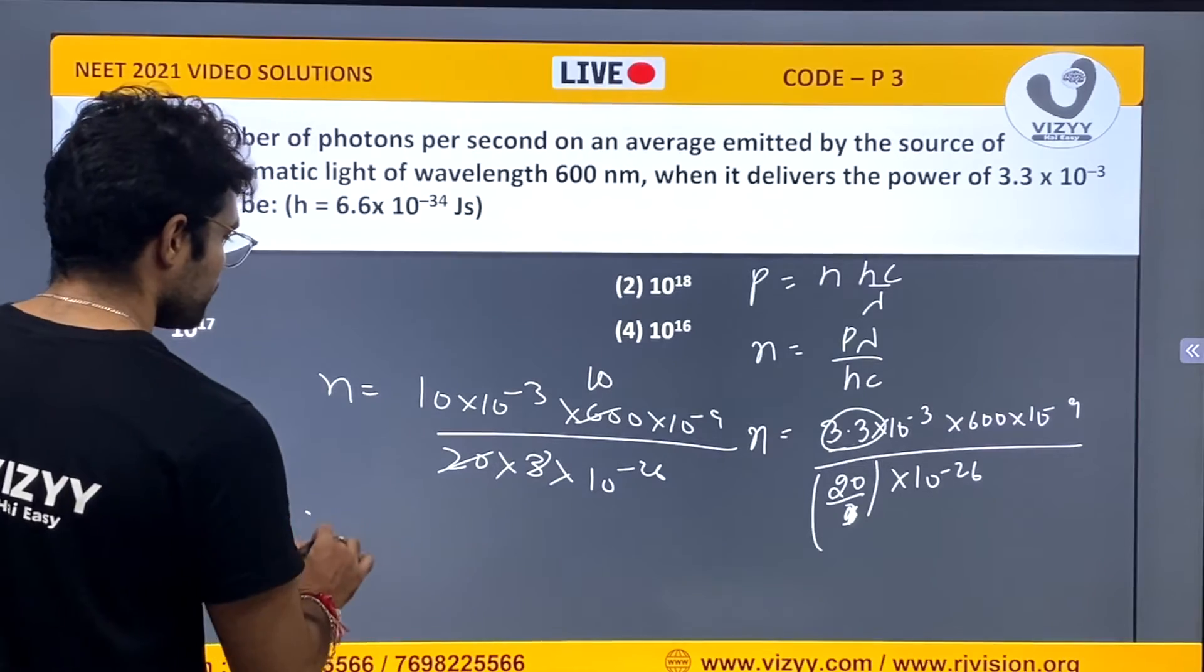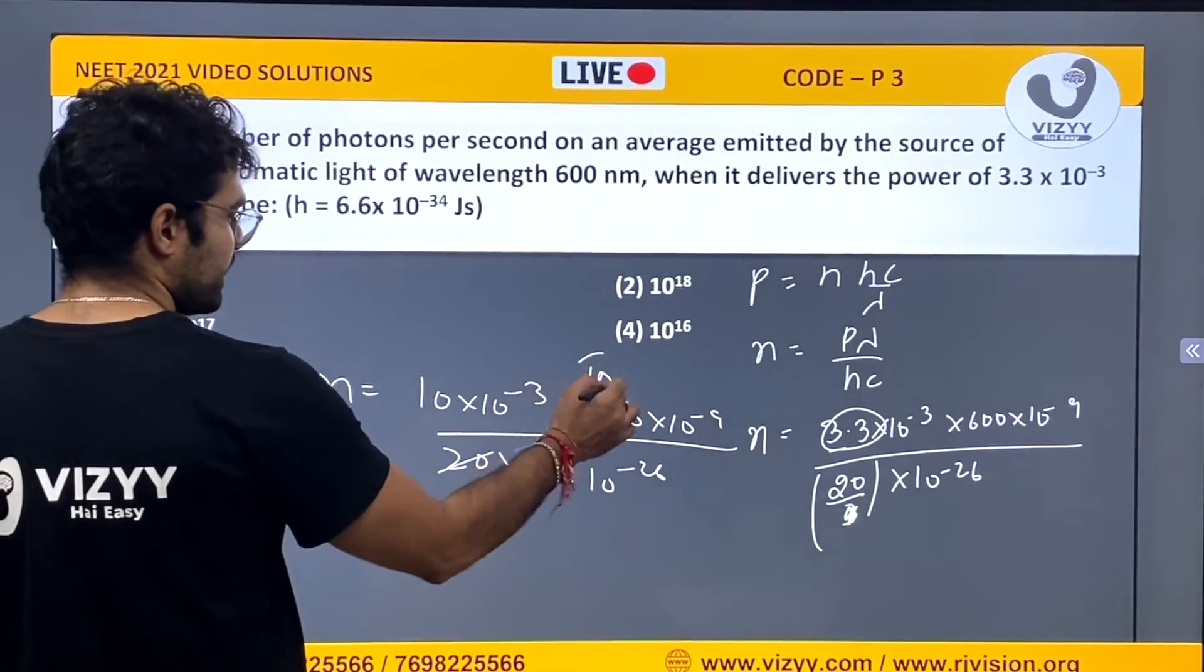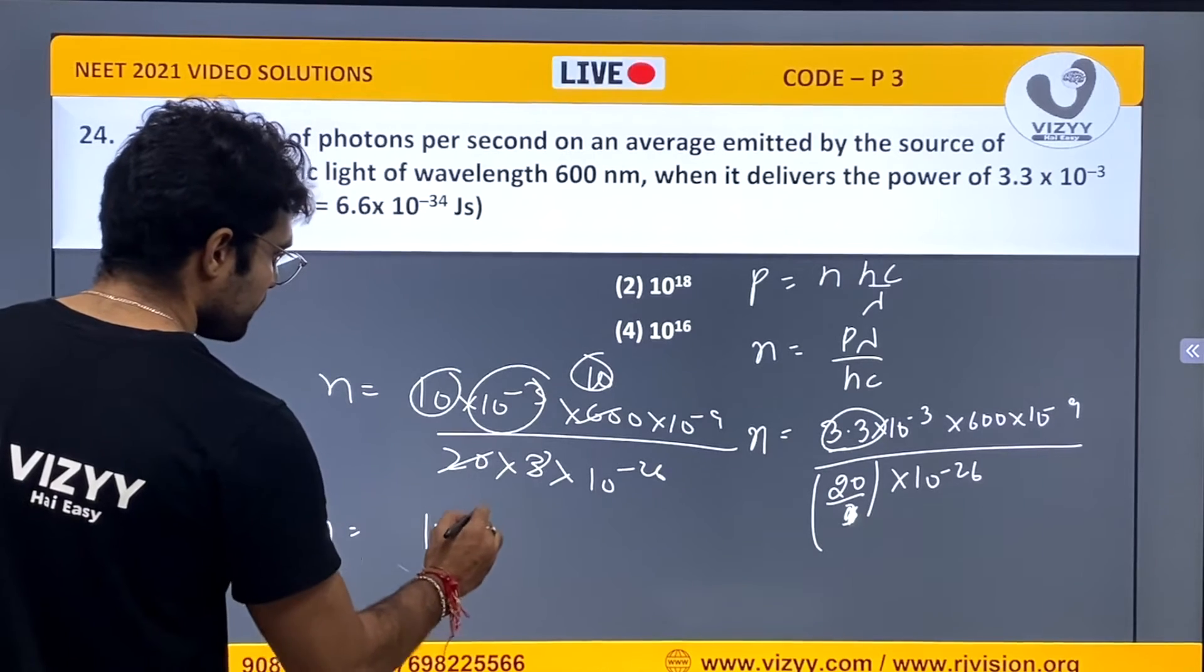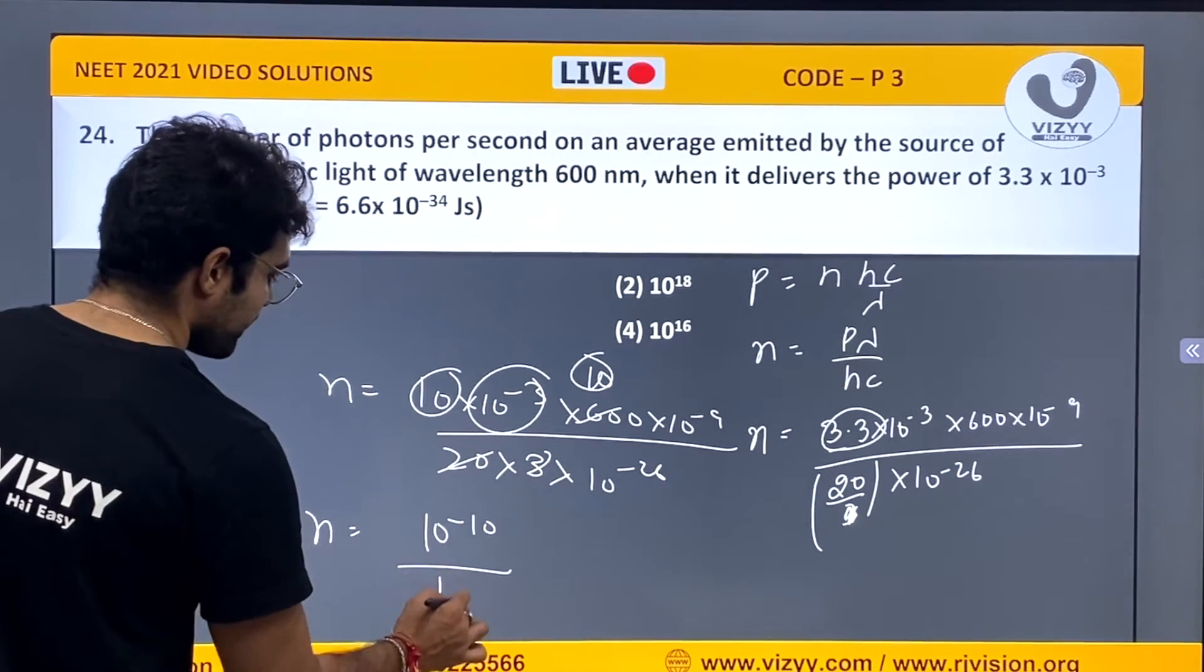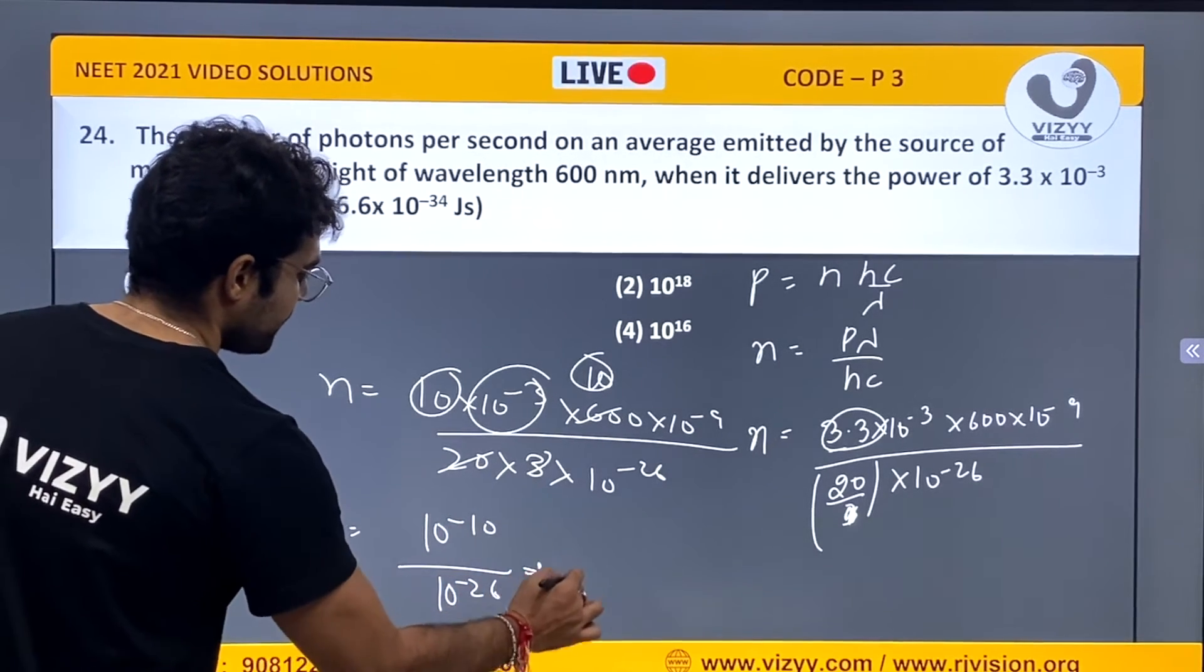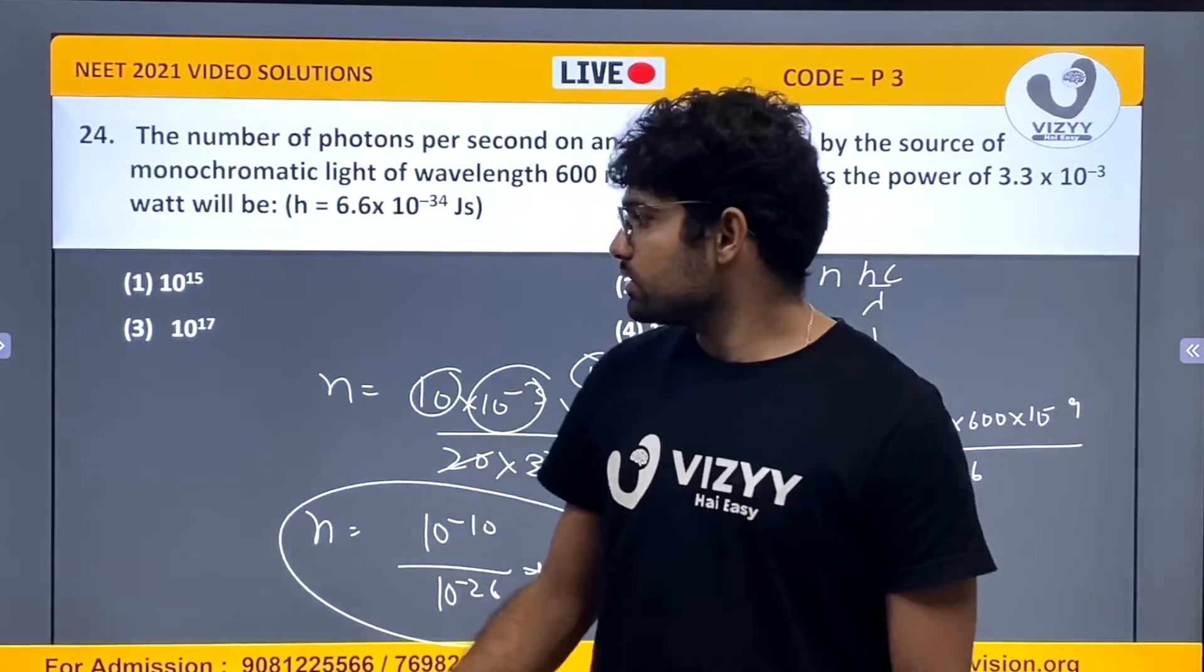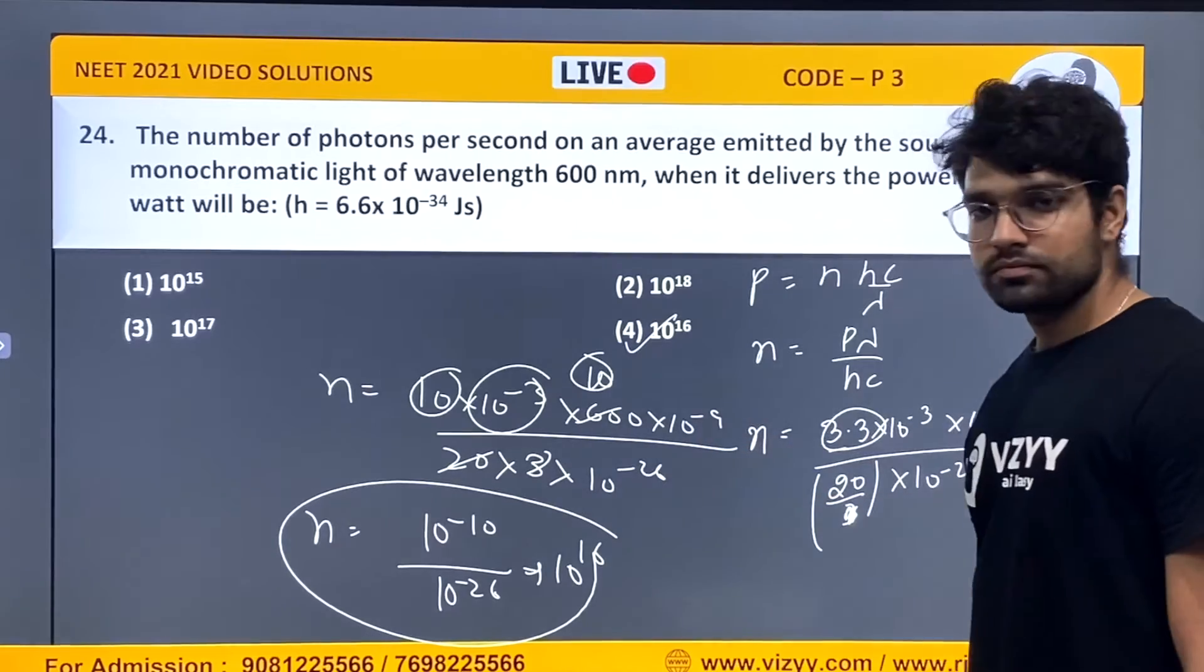You can check in your answer. This is 10 to the power minus 10 divided by 10 to the power minus 26. Your answer will be 10 to the power 16. This is your correct answer. So 10 to the power 16, answer option D. Is it clear?